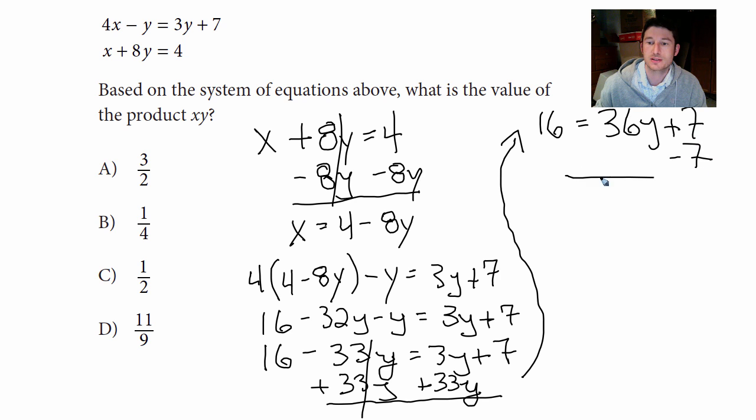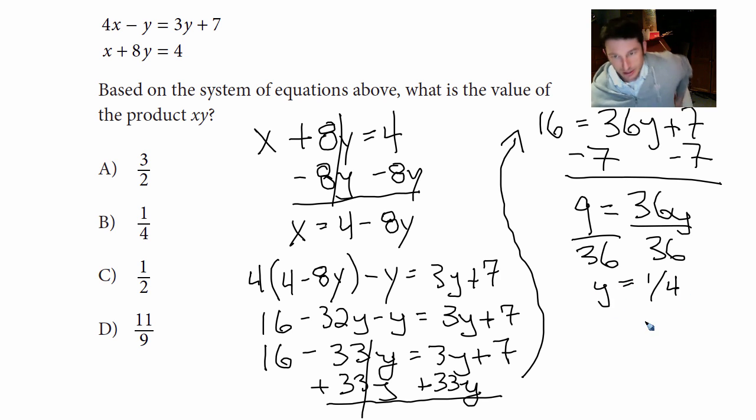Last thing I'll do is I'll minus 7. And we get 9 equals 36Y. I divide by 36. And we get Y equals a quarter. Right? 9 over 36 is one quarter.